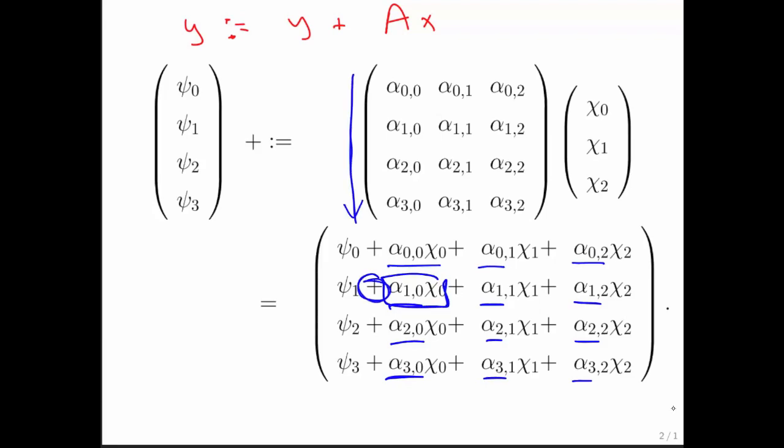Again, this is an m by n matrix, so there are m times n elements in the matrix. And for each of those, you do a multiply and a scalar add. So that means a total of 2 times m times n floating point operations.